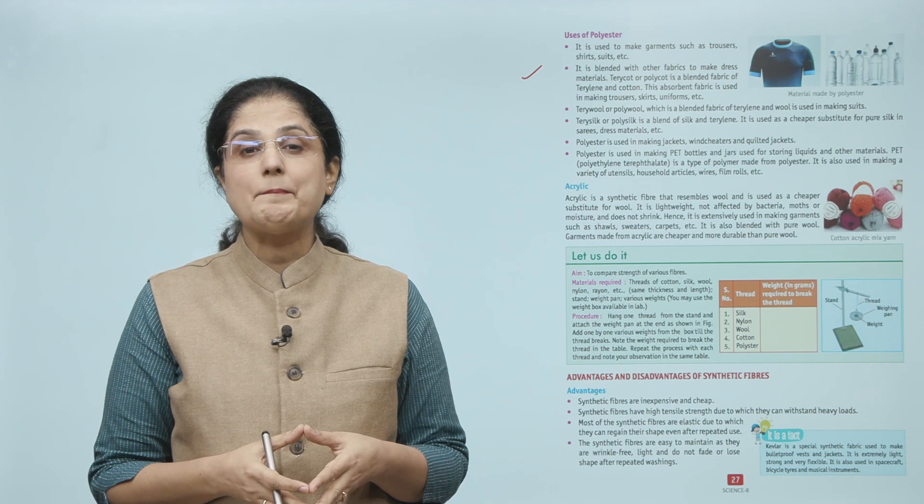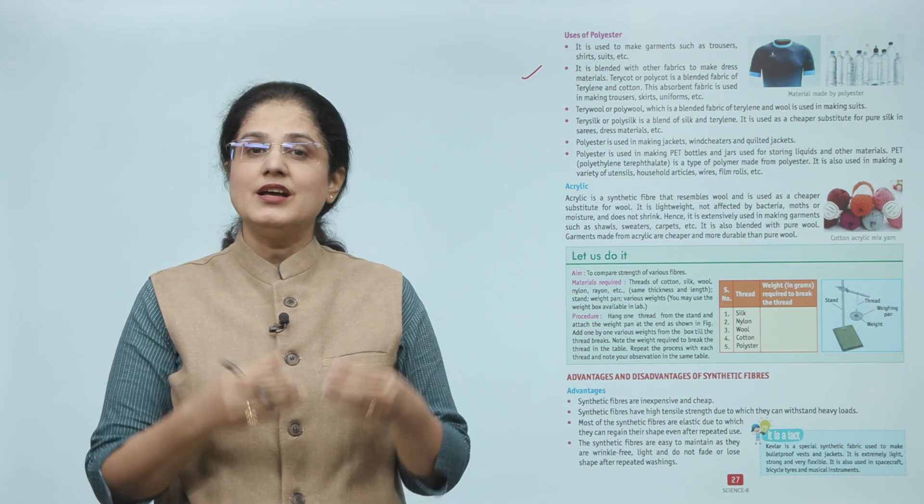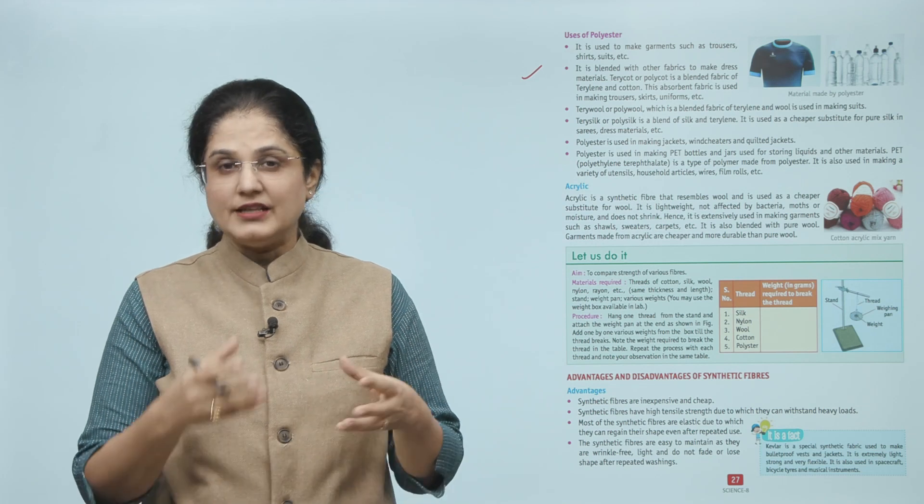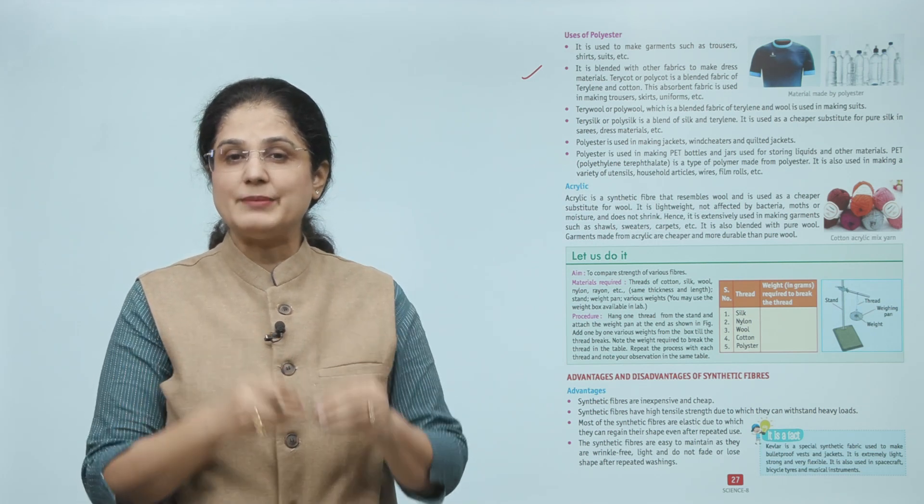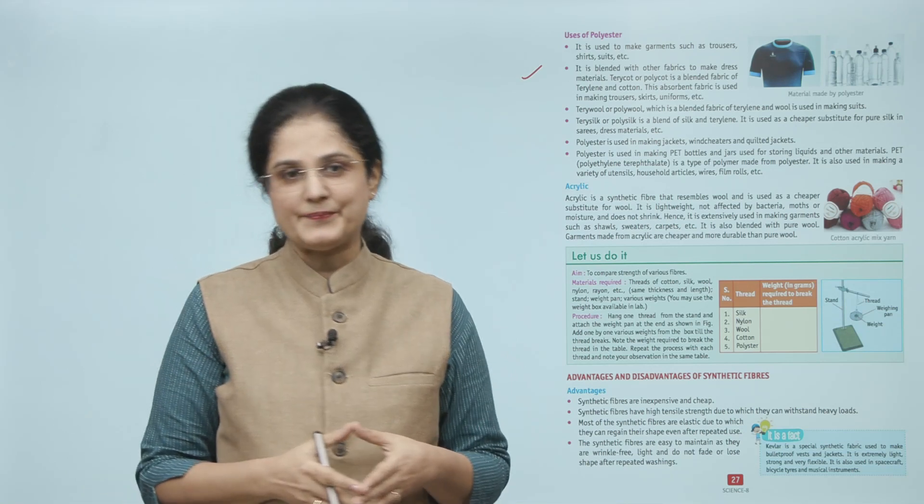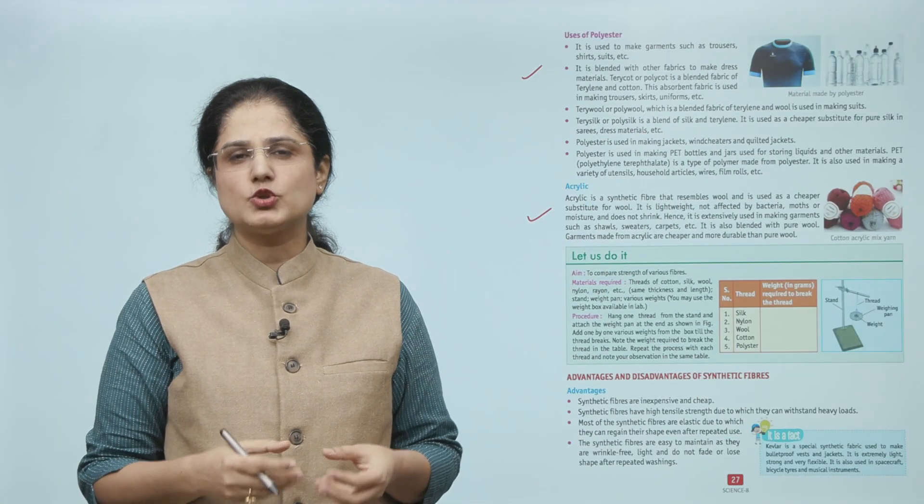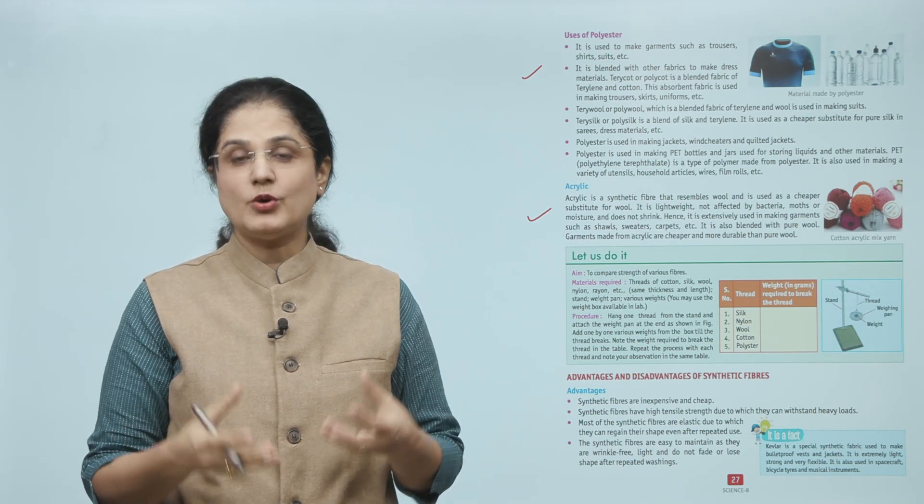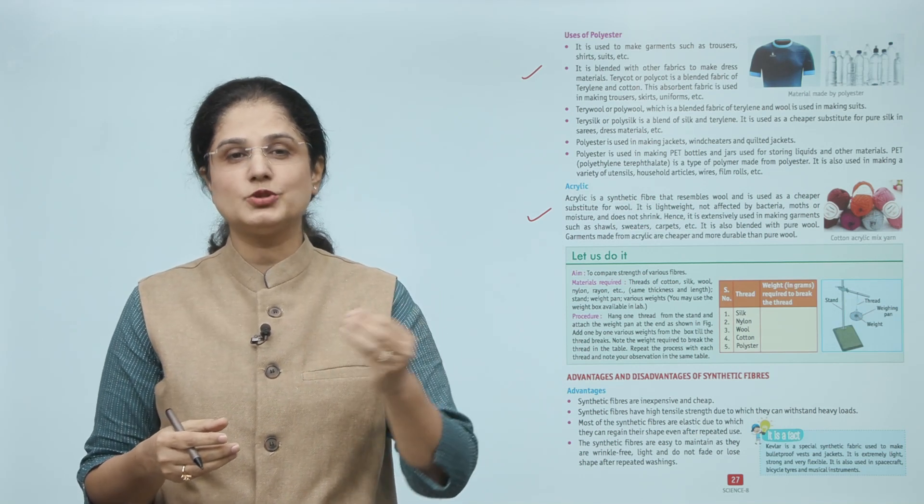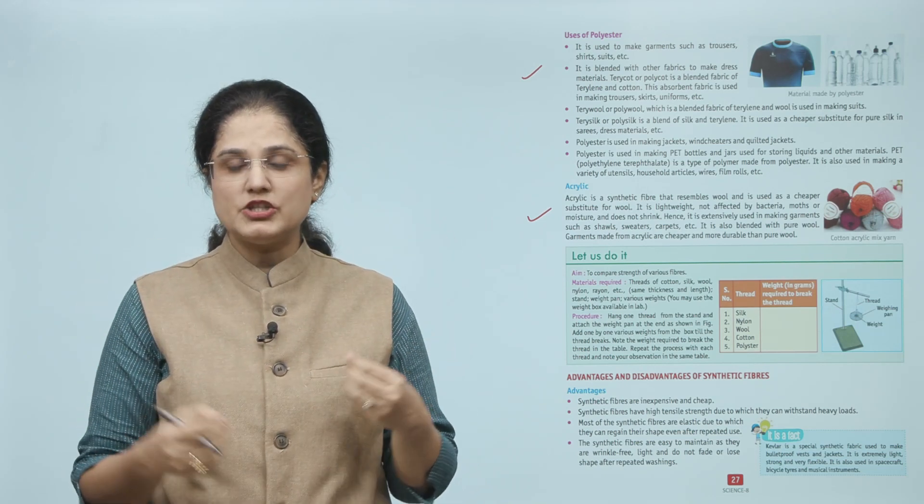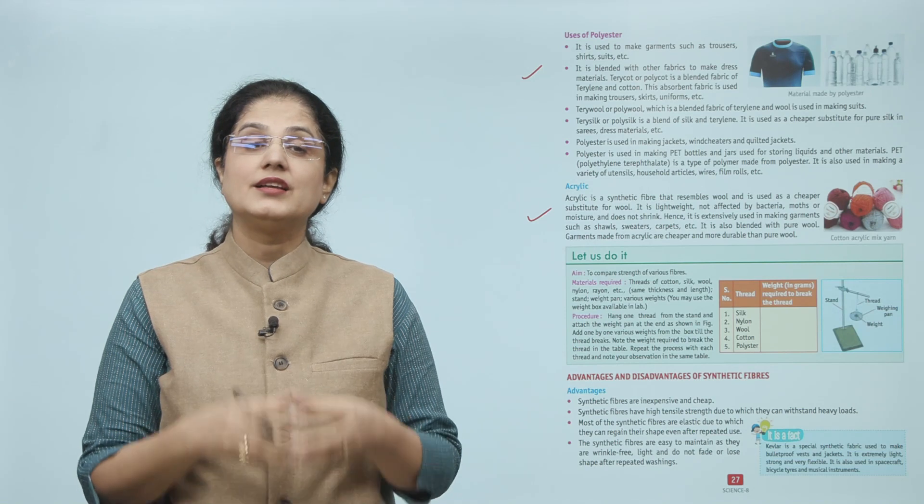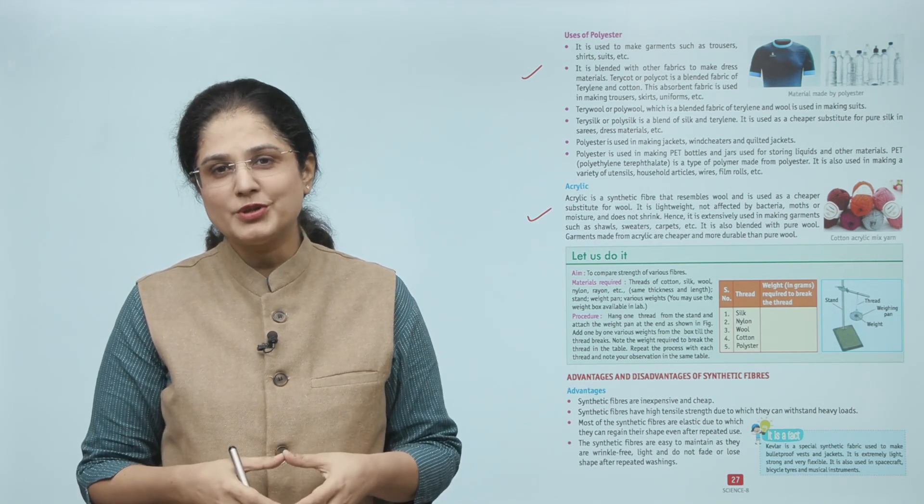Terricot or polycot is blended fabric of terylene and cotton. This absorbent fabric is used in making trousers, skirts, uniforms. Then terrywool or polywool, which is a blended fabric of terylene and wool, is used in making suits. Terrysilk or polysilk is a blend of silk and terylene. It is a cheaper substitute of pure silk and is used for sarees and dress materials. Polyester is also used in making jackets, windcheaters, and quilted jackets. Polyester is also used in making PET, that is polyethylene terephthalate. PET bottles and jars are used for storing liquids and other materials. Acrylic is a synthetic fiber which looks like wool and is a cheaper substitute. It is lightweight and is not affected by bacteria, moths, or moisture, so it doesn't shrink. It is used in garments like shawls, sweaters, carpets.